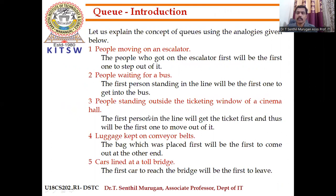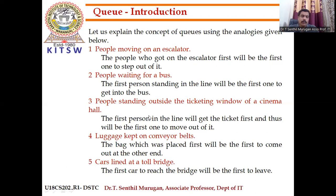So what is Queue? Before starting the Queue data structure, we must know where we are using the queue. For example, people moving on an escalator — whoever steps on first will reach the top floor first. Similarly, people waiting for a bus: if they are standing in a queue, the first person in line will be the first one to get into the bus. The same concept applies wherever we follow the queue — for example, in a ration shop or at a voting booth, we follow the queue to vote in elections.